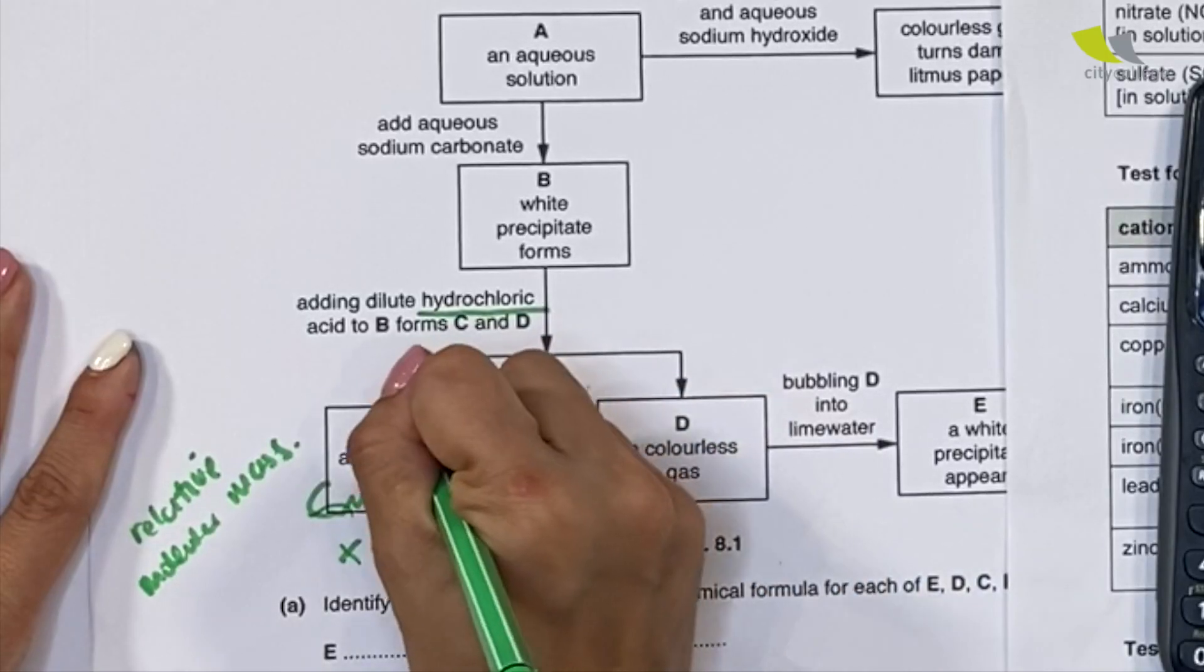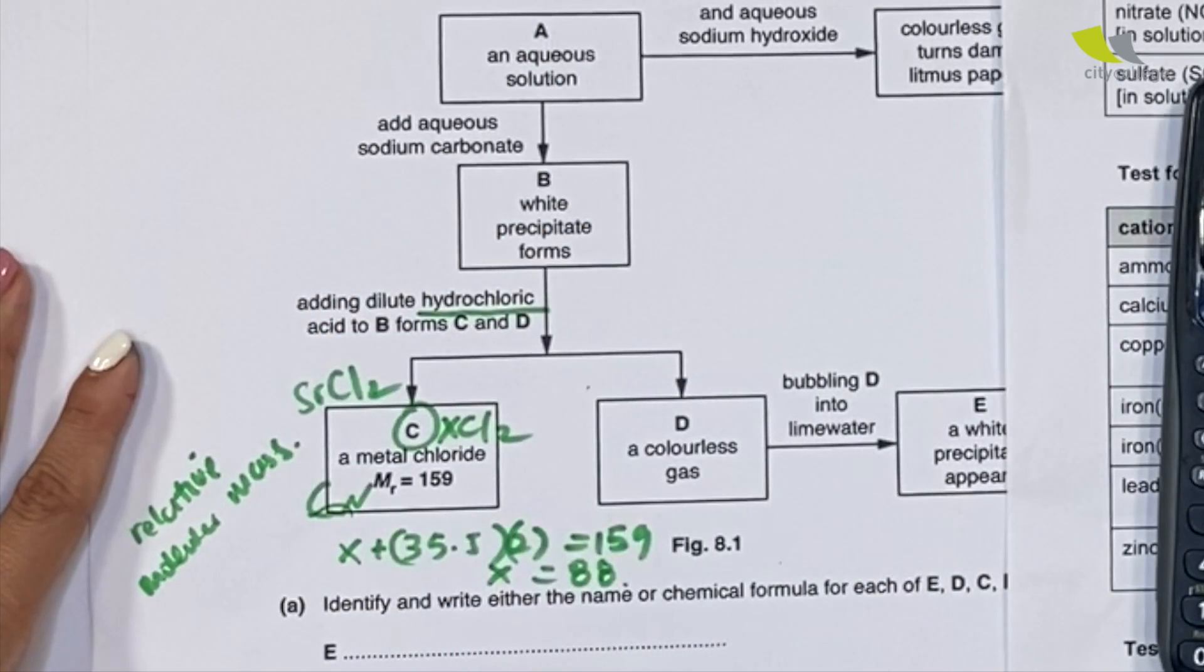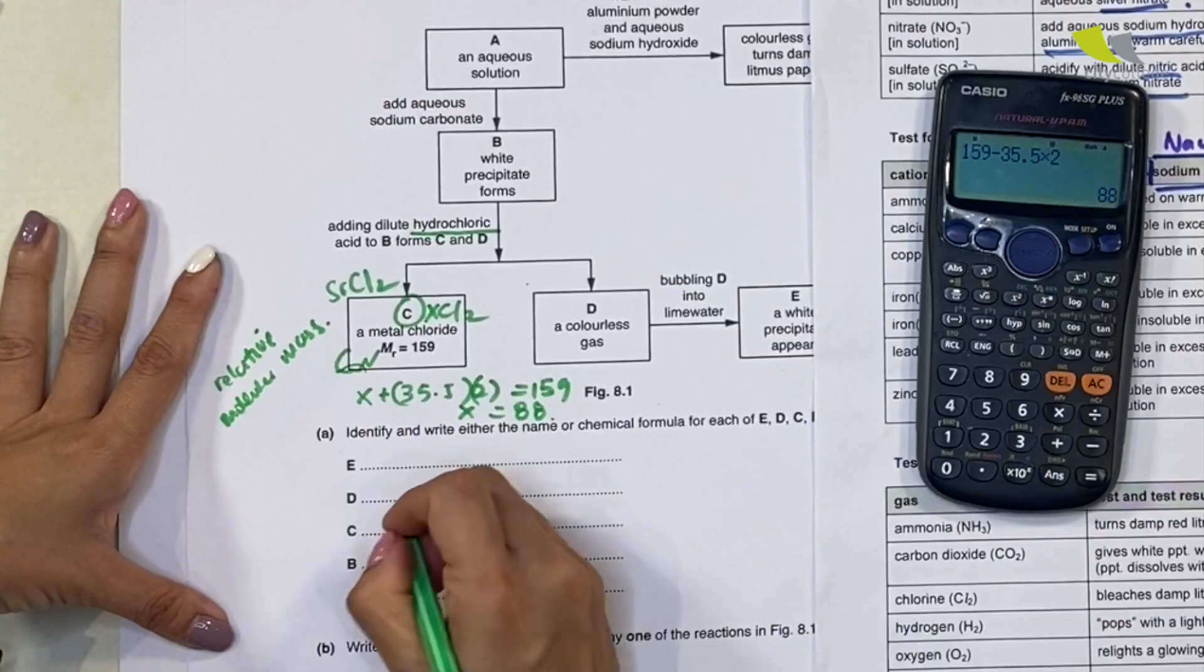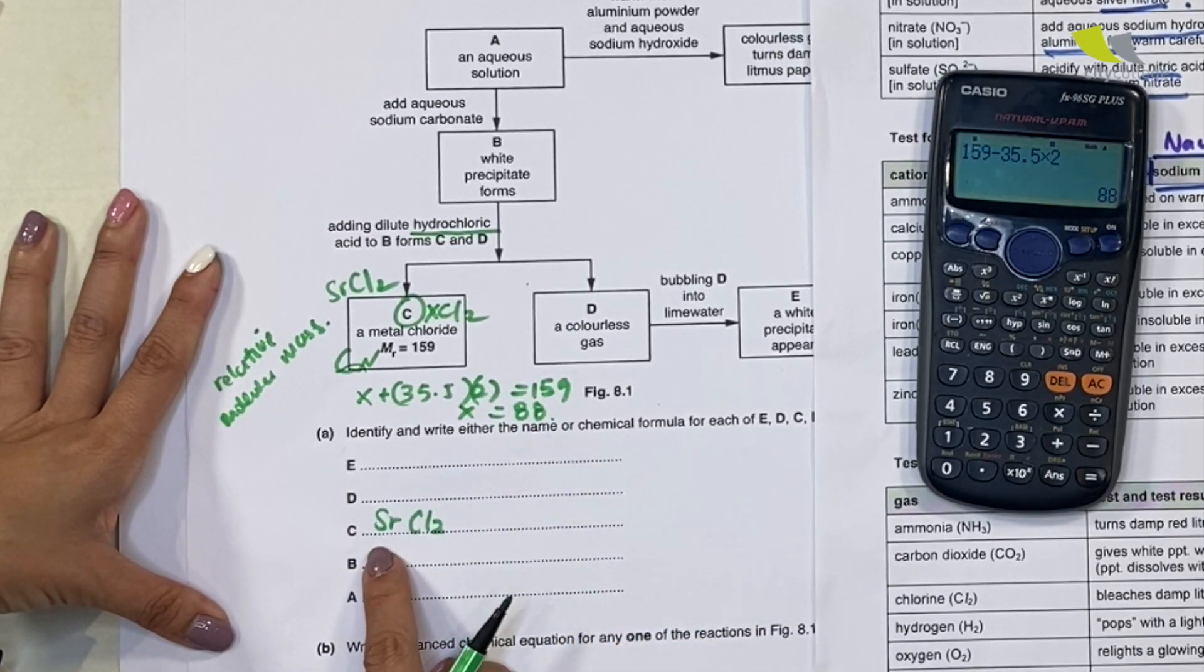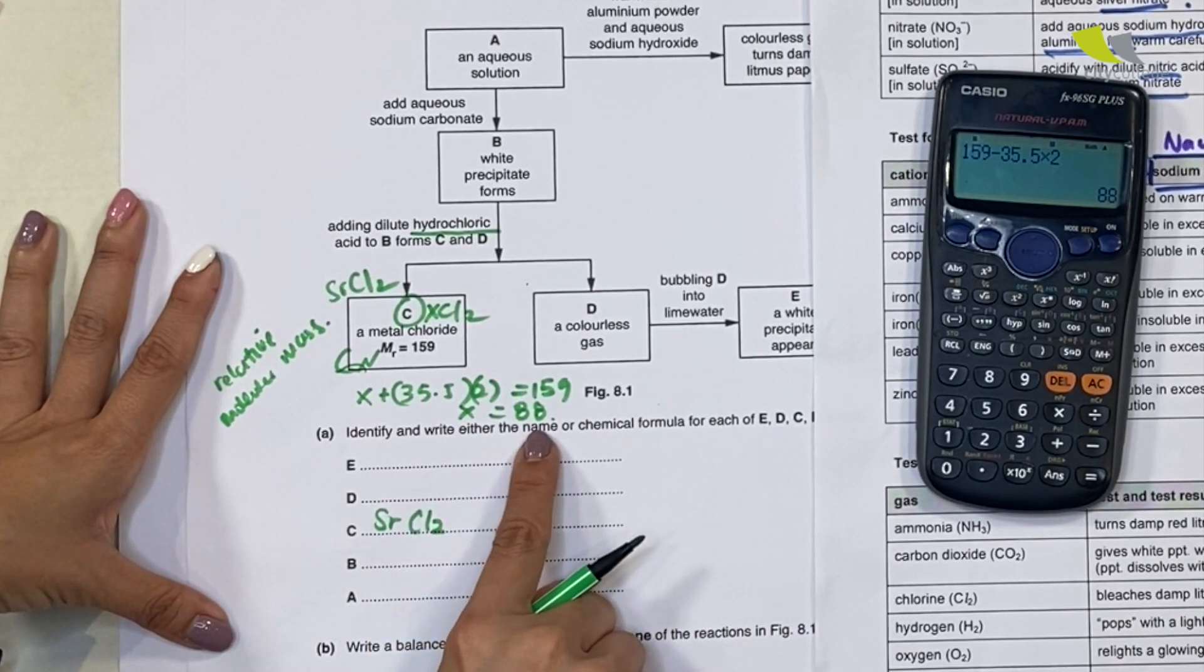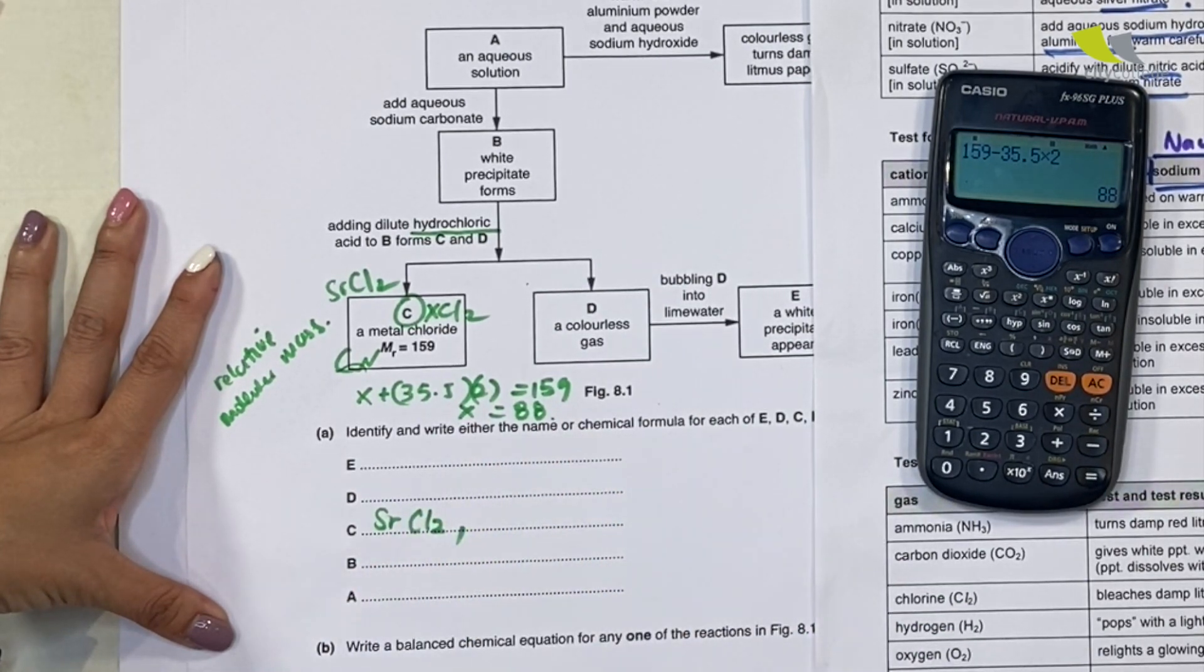Immediately I know that this is actually SrCl2. So my C is actually SrCl2, strontium chloride. I'm supposed to write down either name or chemical formula, so this is the chemical formula. I'll just leave it there.